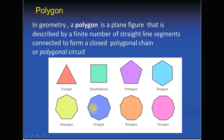An octagon is also a type of polygon. In an octagon there are eight sides connected to form a closed polygonal chain — line segment one, two, three, four, five, six, seven, and eight. A nonagon is a polygon in which there are nine line segments connected to form a closed polygonal chain.